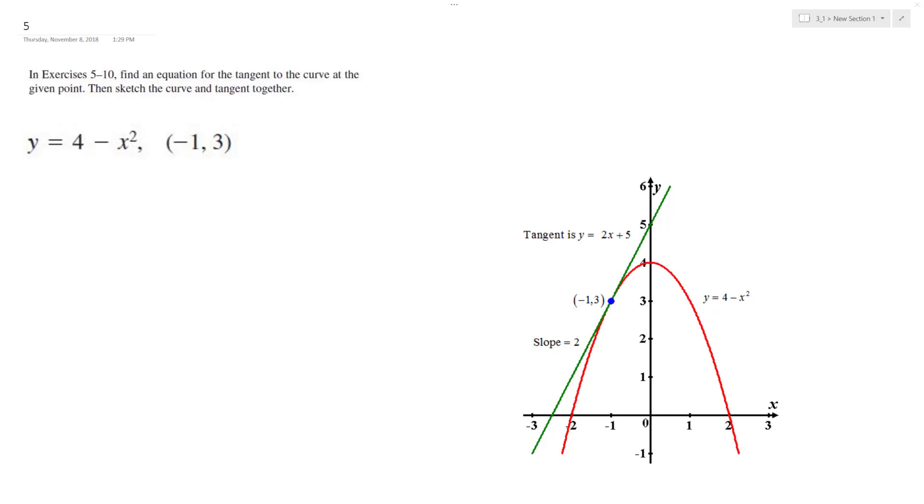Solving the following problem. We want to find out the tangent line at the point negative 1, 3 on this curve. I already have the graph here, but I'm going to show you how it's derived.